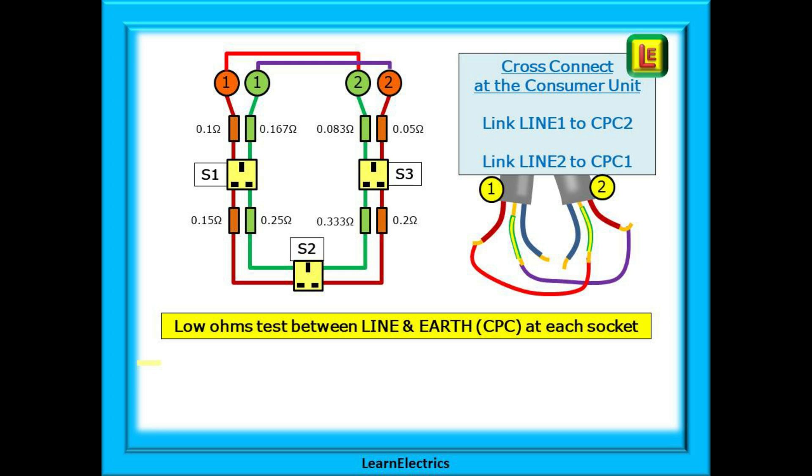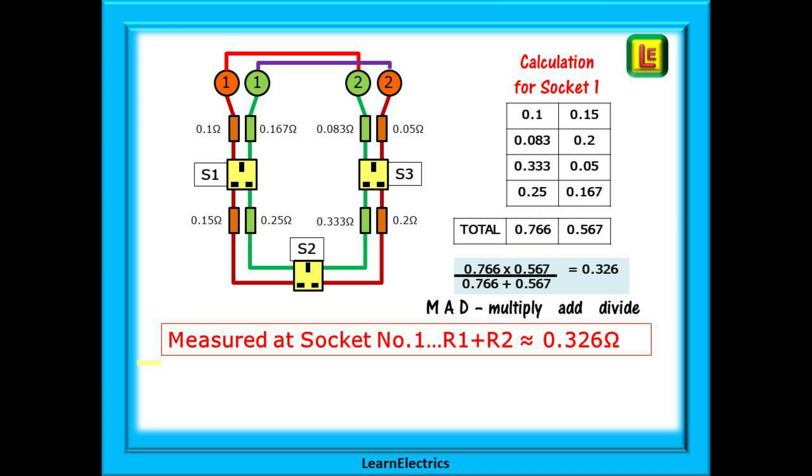Now we can low ohms test with a meter between the line and earth terminals at each socket. Note we do not test at the consumer unit. I've made every conductor here have a different resistance to make the next bit easy to follow. Starting at socket number 1, follow the path of the resistances. Up from S1 to the 0.1 ohm resistance, through the link to the 0.083 ohms resistance, then the 0.33 ohm and lastly the 0.25 ohm resistance. And now we are back at S1.